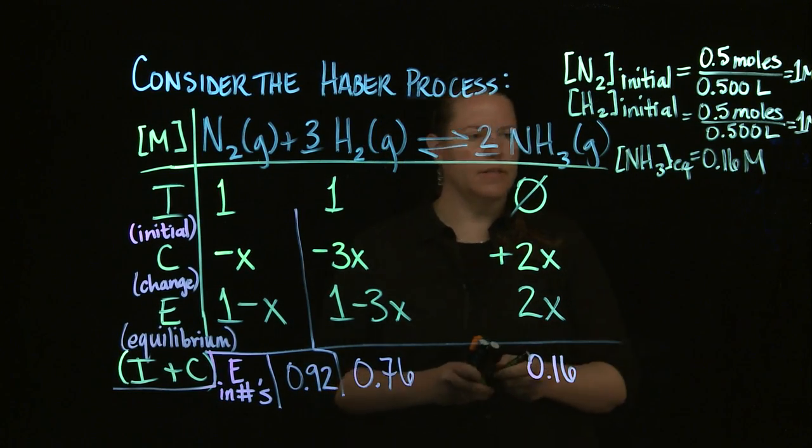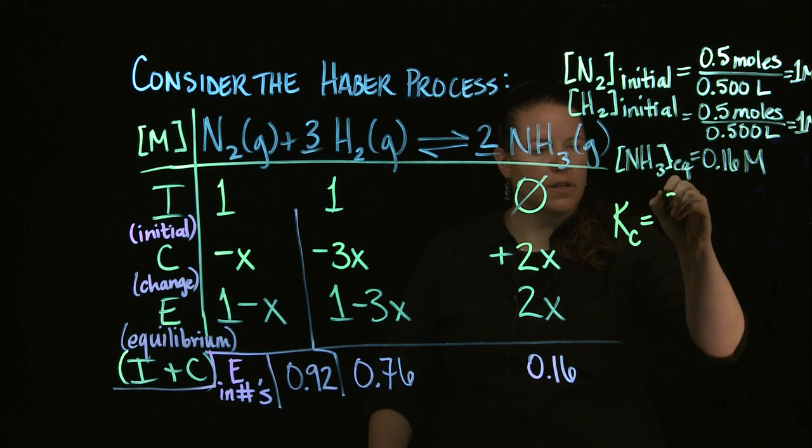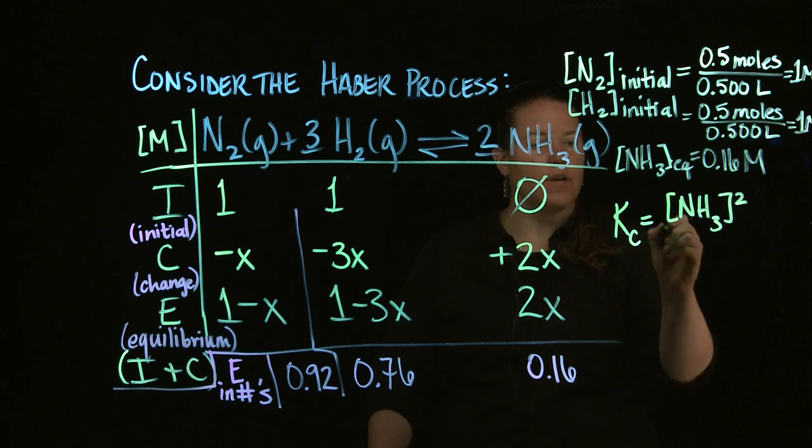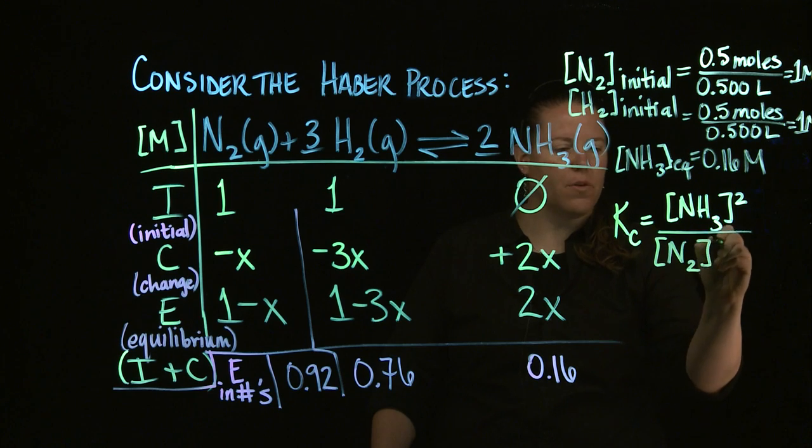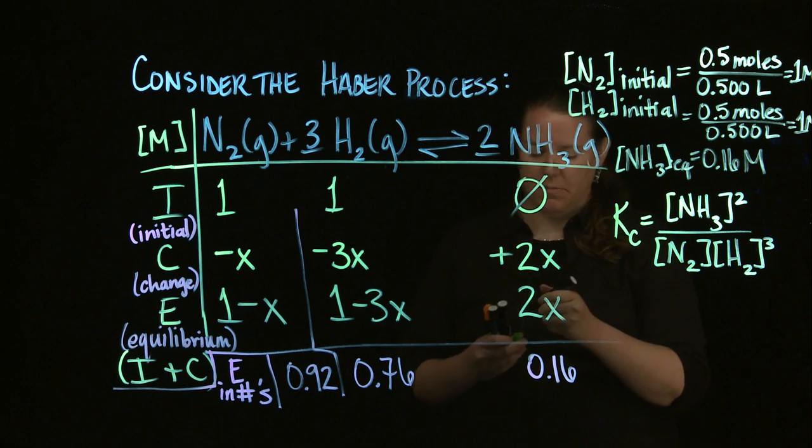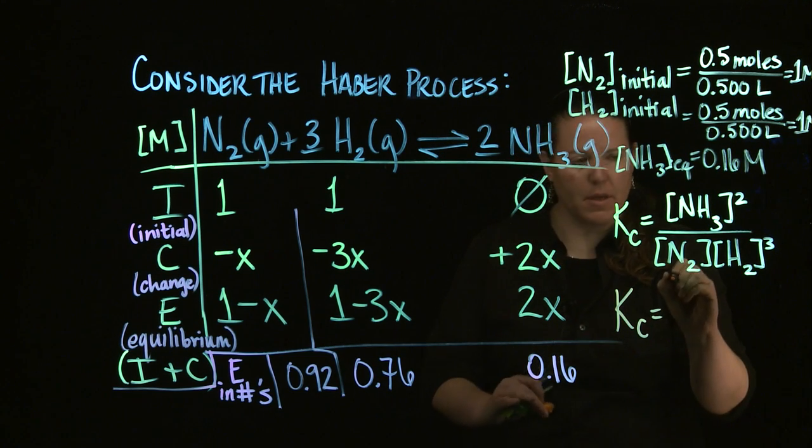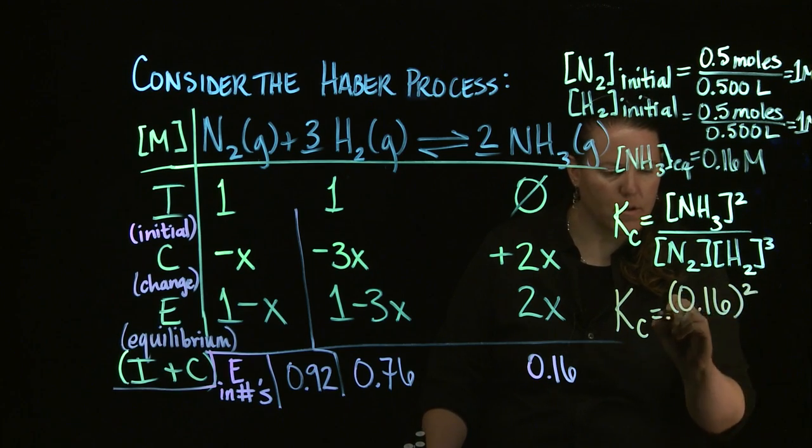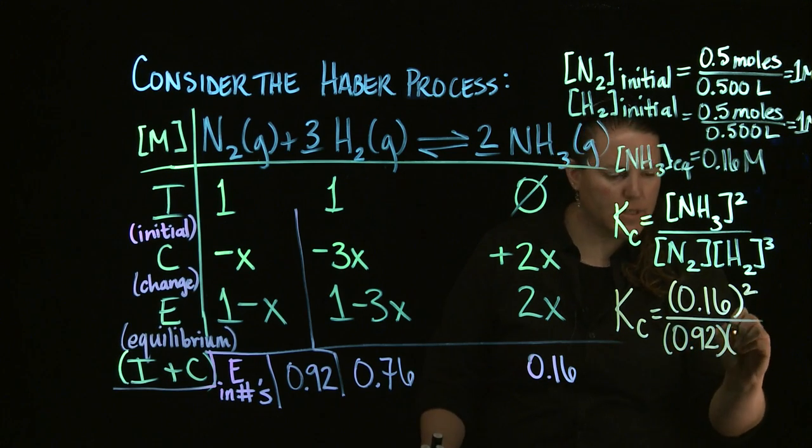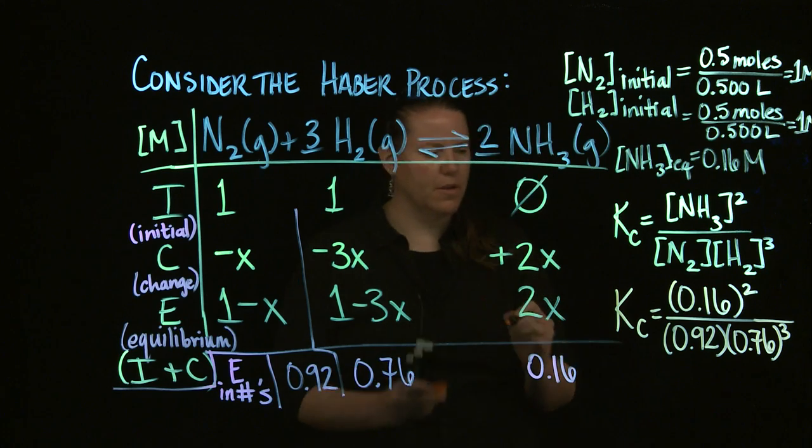In that case, Kc for this expression, we need to find that, figure that out. Kc, remember, is the products, the concentrations of the products to the power of their coefficients, and over the concentrations of the reactants to the power of their coefficients. Can you guys see that? Yeah, you can see it. Good. Now I'm just going to plug in my numbers now that I have them. So I know that my Kc is going to be 0.16 squared divided by N2, which is 0.92, and 0.76 cubed, which is going to be a number that's ridiculously small.